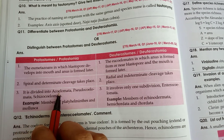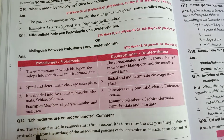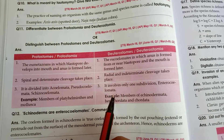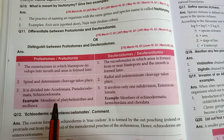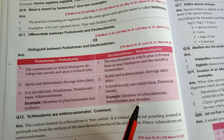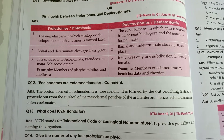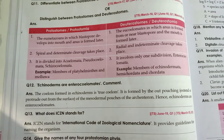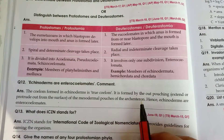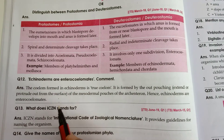Protostomia is divided into acoelomates, pseudocoelomates, and eucoelomates. Deuterostomia also has subdivisions. Examples of Protostomia include members of Platyhelminthes and Mollusca. The coelom in deuterostomes is formed by outpouching of mesodermal pouches of the archenteron, hence they are enterocoelomates.